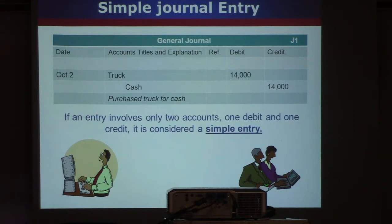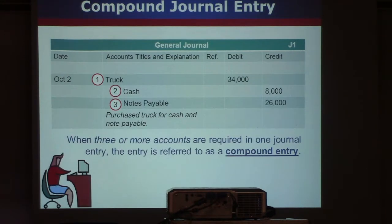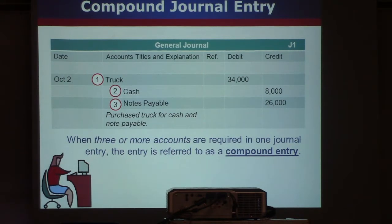Journal entries will rarely be this simple. Of course, there will be some simple transactions, but most of them will be a bit more complicated. One of the more complicated transactions would look like a compound journal entry, where we have more than two accounts being affected — three, four, five accounts in one transaction. In this case, you have three accounts being affected: truck, cash, and notes payable.